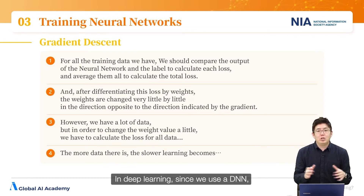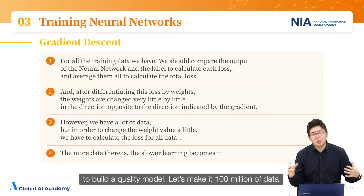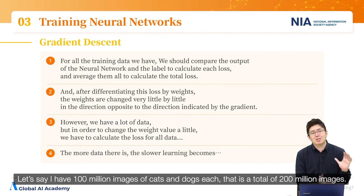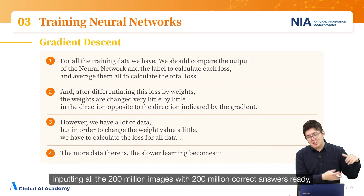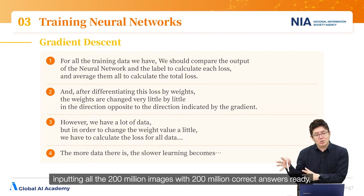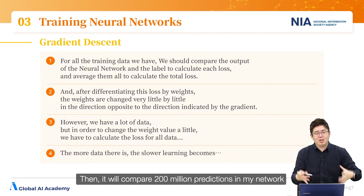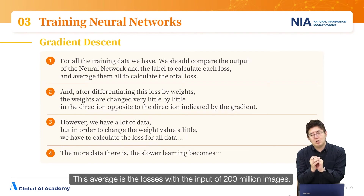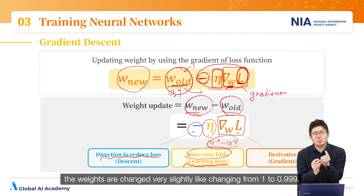We have a problem in deep learning: since we use a DNN, we need a lot of data. For example, let's say we have 100 million images of cats and 100 million of dogs — a total of 200 million images. When we input all the data to train it, we input all 200 million images with 200 million correct answers ready. It produces 200 million prediction results, then compares them with 200 million correct answers to find the losses, and usually averages them.